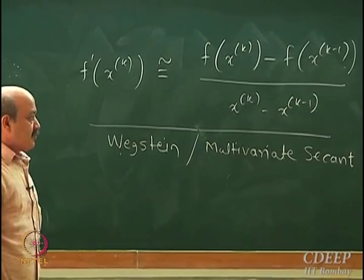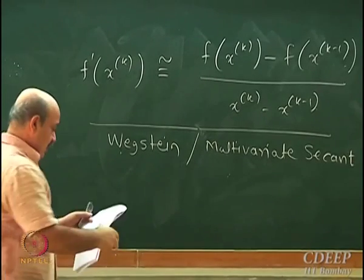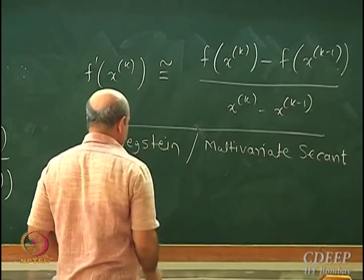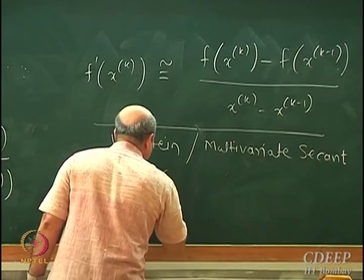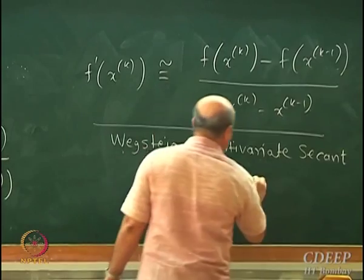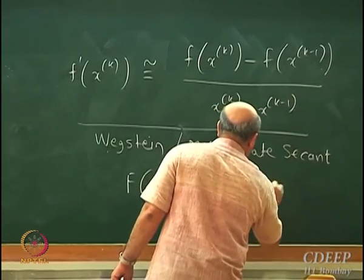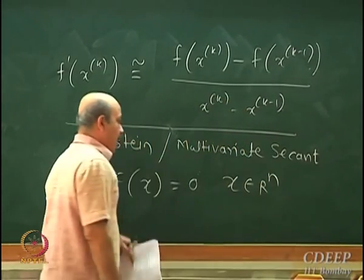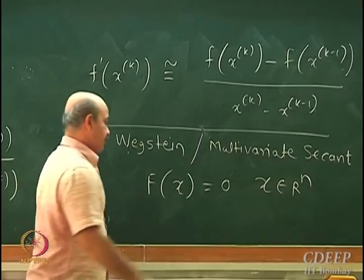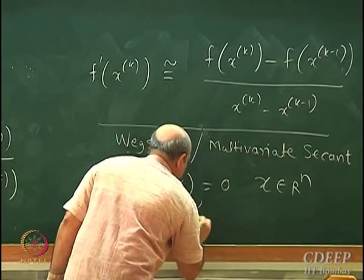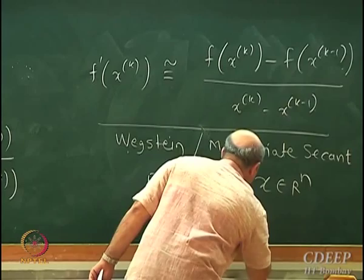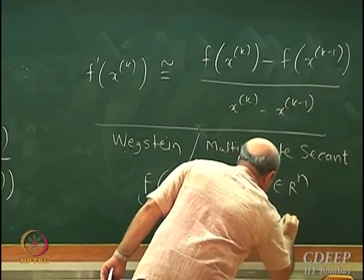This multivariate secant method is known as Wegstein iterations or the Wegstein method. Here I want to solve for f(x) = 0 where x belongs to R^n and f is an n×1 function vector.